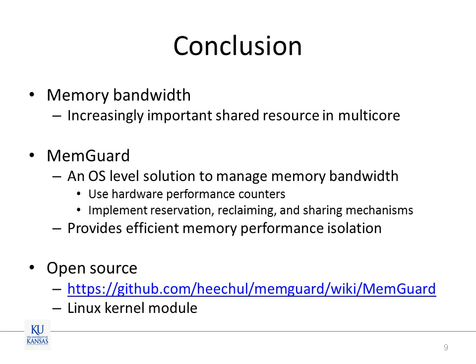To conclude, memory bandwidth is an increasingly important shared resource in multicore platforms. In this work, we present an OS solution that manages memory bandwidth to provide performance isolation and high efficiency. MemGuard is implemented as a Linux kernel module and can be found at the following URL. Thank you for listening.